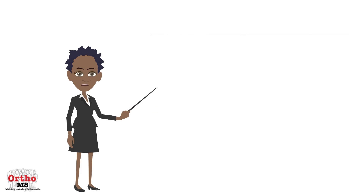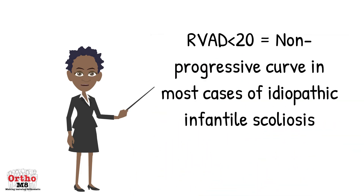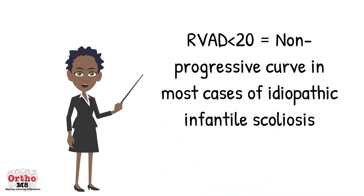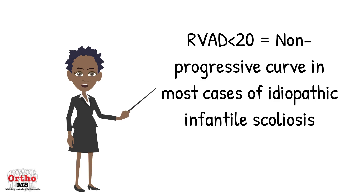Now here is the important bit. A rib vertebral angle difference of 20 degrees or less is associated with a non-progressive or resolving, in most cases, idiopathic infantile scoliosis.